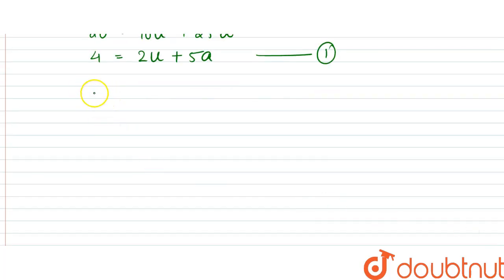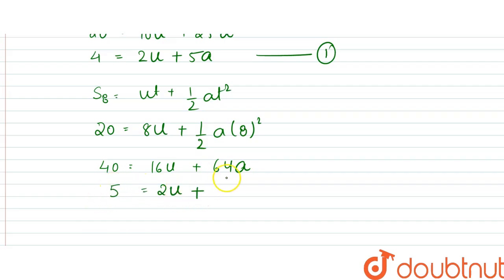Similarly, s8 equals ut plus half at square. So we can write this to be equal to 20, which is equal to 8u plus half into a into 8 square. So this was equal to 40 equals 16u plus 64a. So now this was equal to 5 equals 2u plus 8a. So this was our second equation.